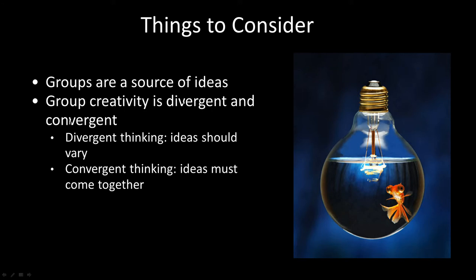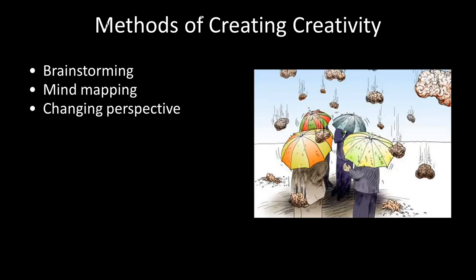Divergent thinking is when ideas vary inside the group — people think outside of the box and try different things. Convergent thinking, however, is when these ideas must eventually come back together for the group to be successful. It's good early on to think outside the box, but as you move toward task completion, you and your group members need to come back together with your ideas.